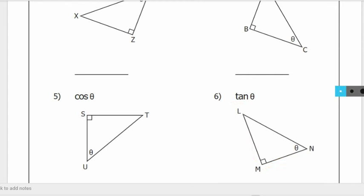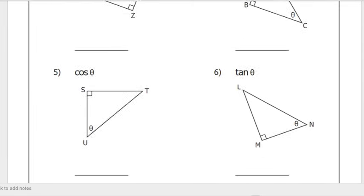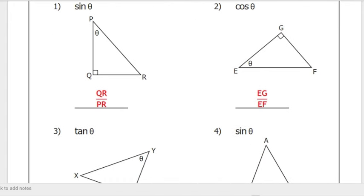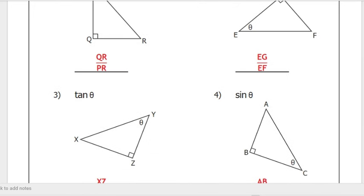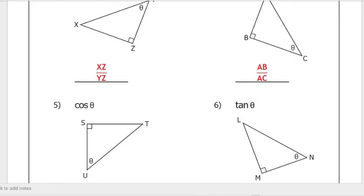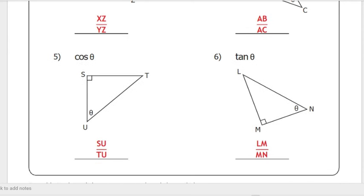Let us check our answers using the answer key. Number 1: QR over PR. Number 2: EG over EF. Number 3: XZ over YZ. Number 4: AB over AC. Number 5: SU over TU. Number 6: LM over MN. That is all. Watch out for our short quiz later in class. Thank you.